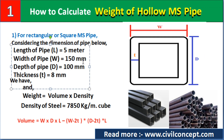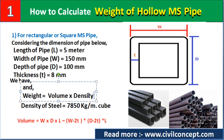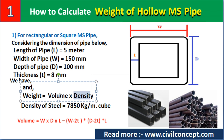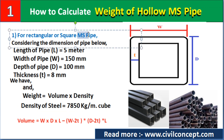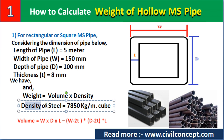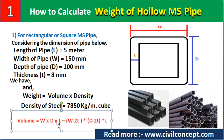We will calculate the weight of this MS pipe using the formula: weight equals volume into density. We need to calculate the volume and use the density to find total weight. MS means mild steel. The density of steel is 7850 kg per cubic meter. The volume formula is: (W × D × L) minus (W − 2T) × (D − 2T) × L.